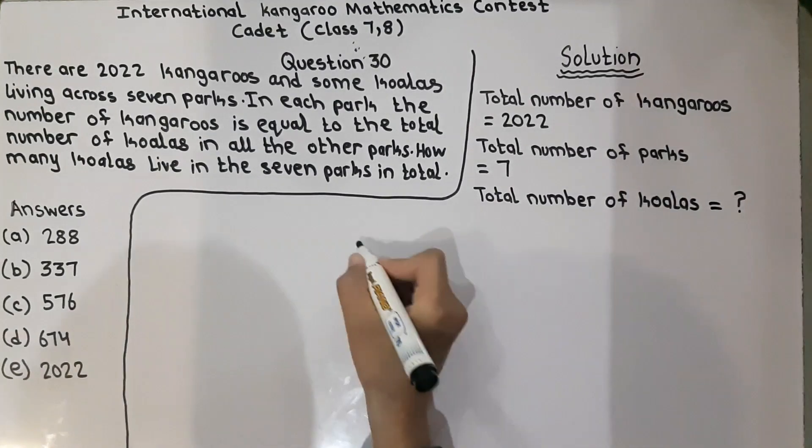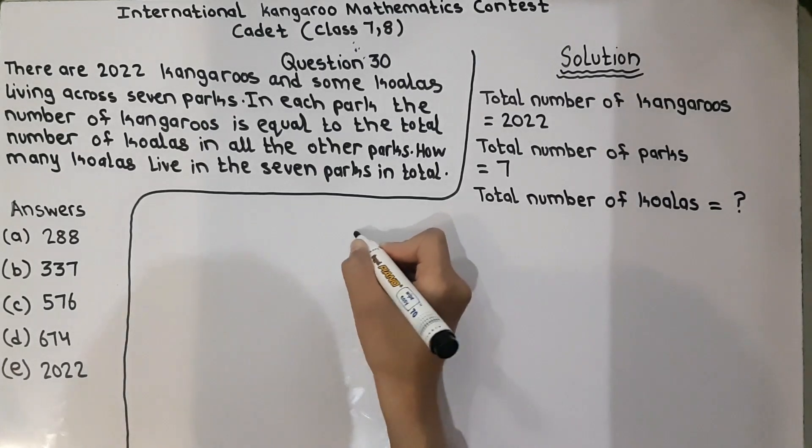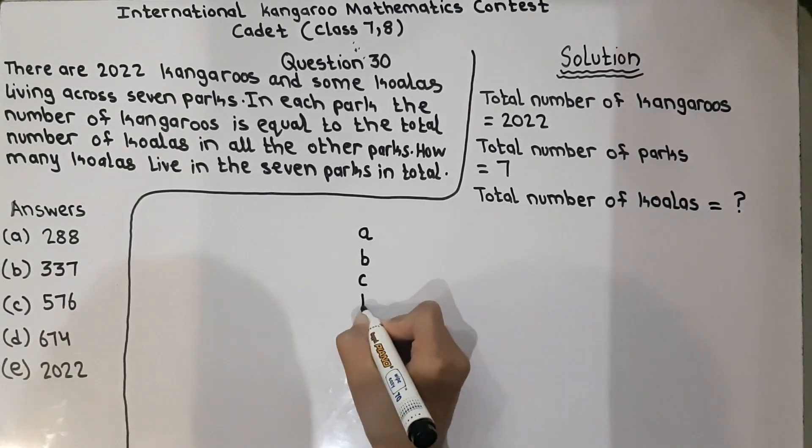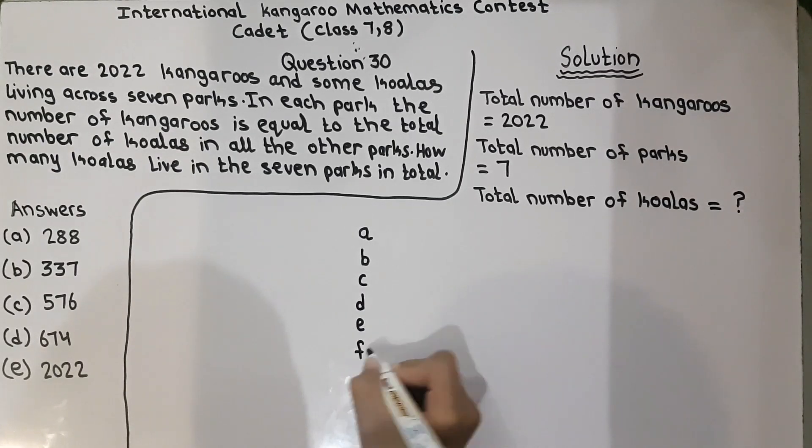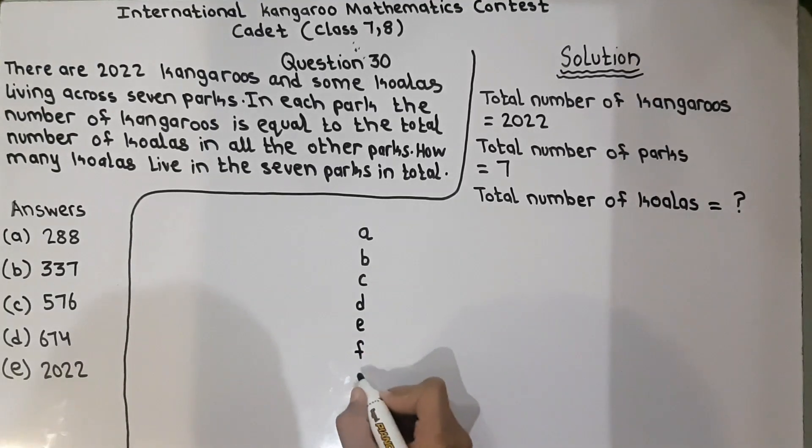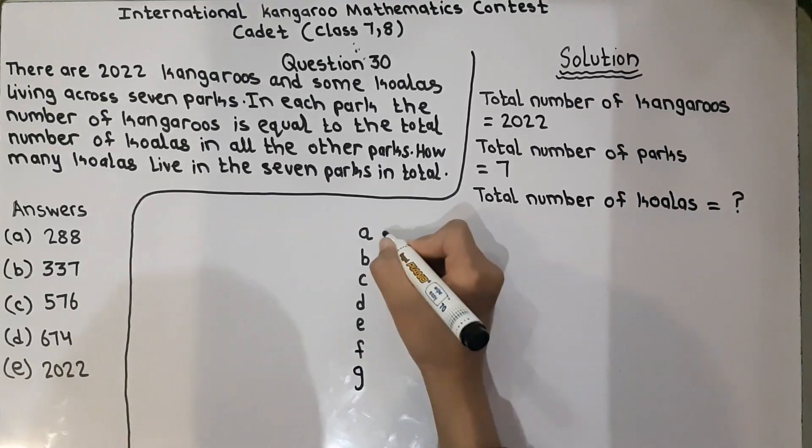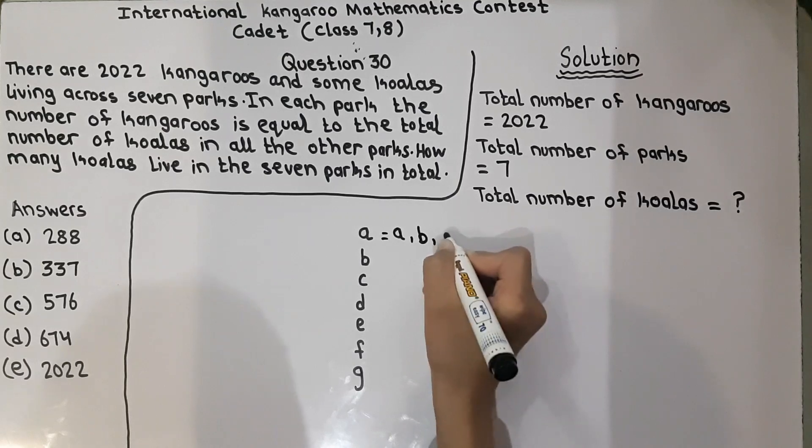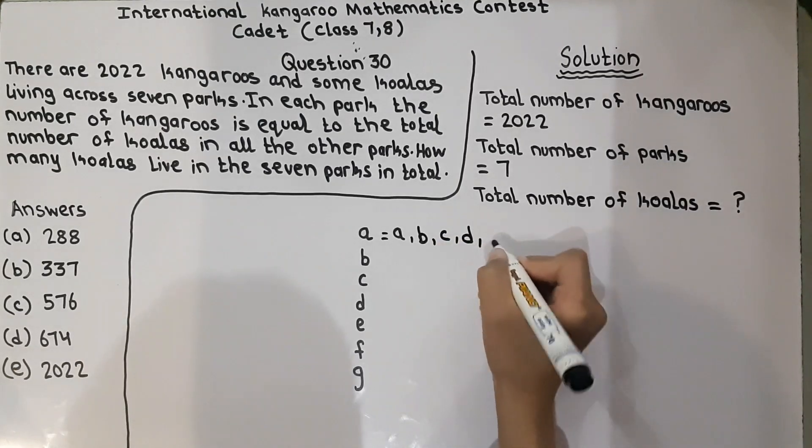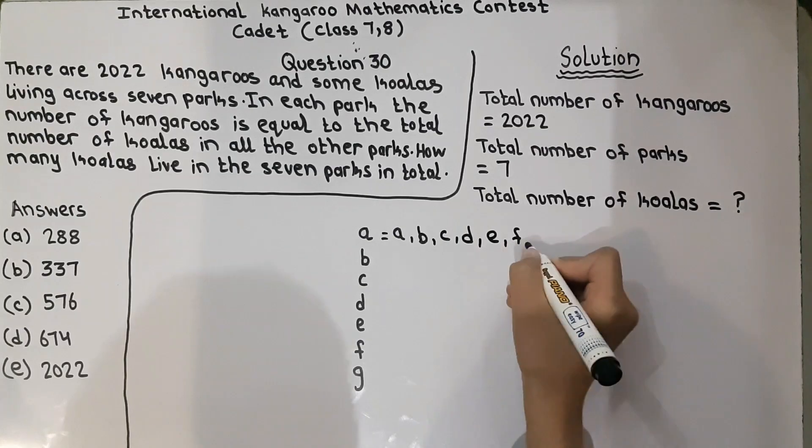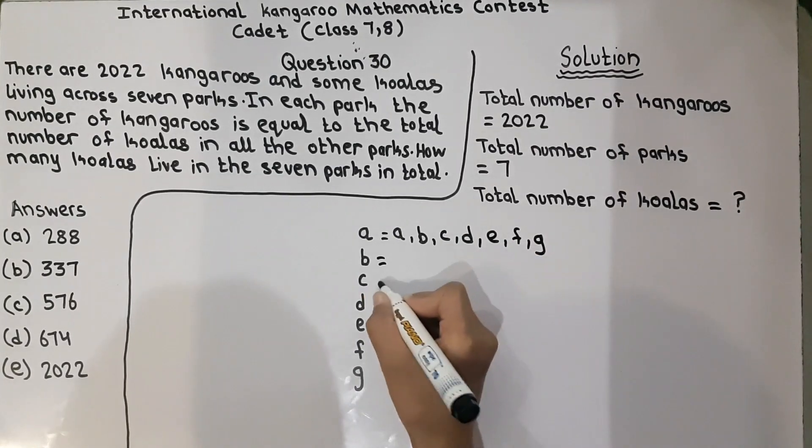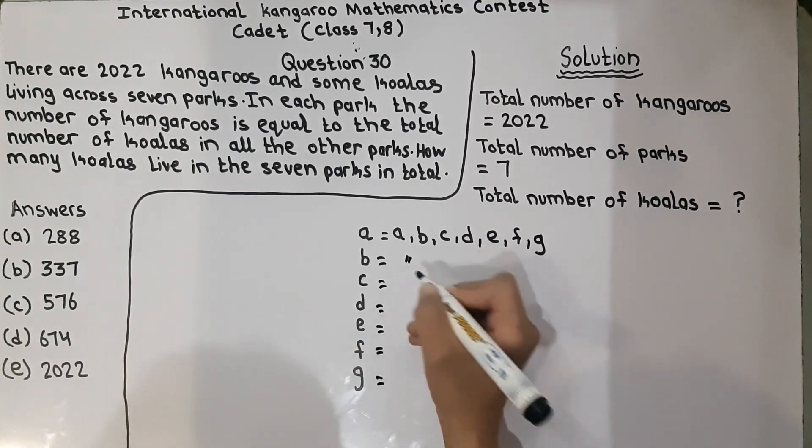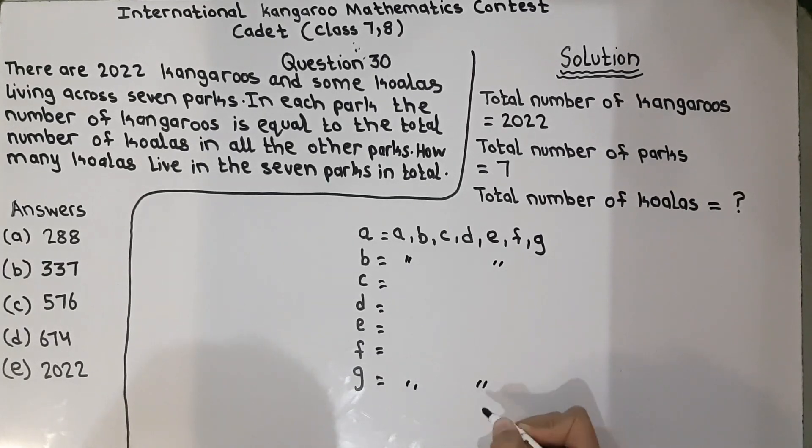So, if we name the kangaroos in 7 parks, like, we give names to kangaroos in 7 parks, like A, B, C, D, E, F, and G. So this is equal to A, B, C, D, E, F, G and likewise, it is the same for all. I am not writing this to save my time, save our time.